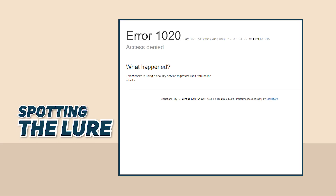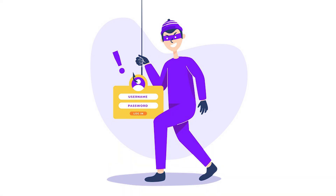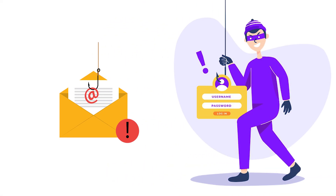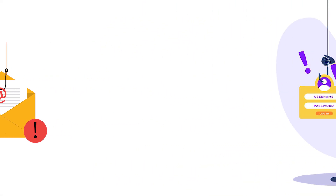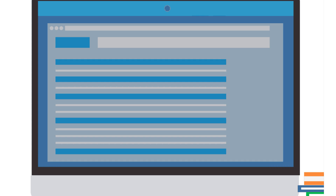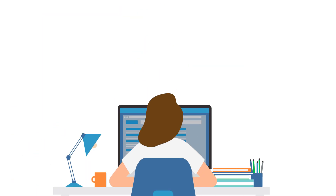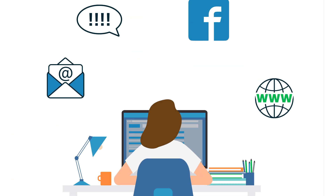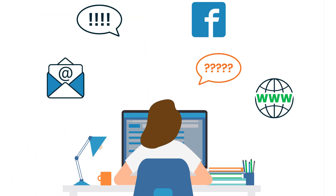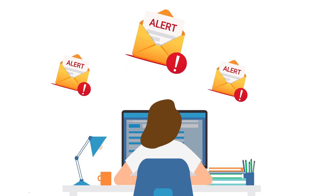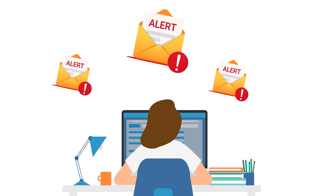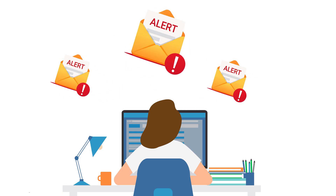Spotting the lure. Even though there are numerous forms of phishing, the one that most people fall for is email scamming. Make no mistake, these attacks can be quite clever. After all, these types of phishing exist because they work. Luckily, there are numerous warning signs that can help you detect this type of phishing. And what better way to learn than with an example?